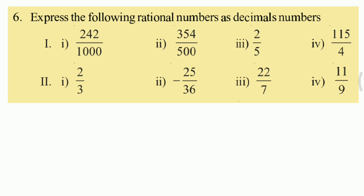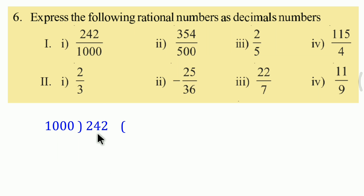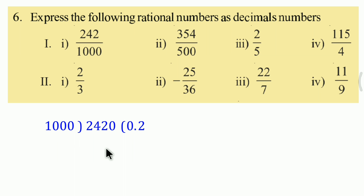First one: 242 upon 1000. We need to divide 242 by 1000. Since 1000 cannot divide 242 directly, we place a point and add a zero. Now 2420 divided by 1000: 1 times 1000 is 1000, so 2 in quotient gives 2000. Then 420 divided by 1000 - again add 0. Continue the division this way.